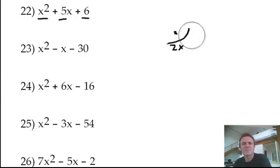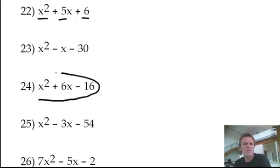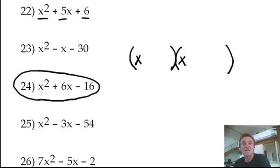Once you've got that, it's just now, what are the numbers? So I can pick any one of these. Let's have a look at 24. This time again, I'm going to do this. That's to get the x squared at the start. How do I get 16 at the end?